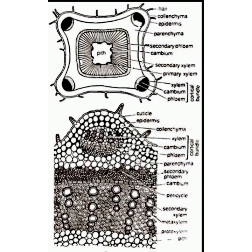Conjoint means both xylem and phloem are present in the same bundle. Collateral means xylem is towards the center and phloem towards the periphery. Open means it has cambium, so it is the open type. Exarch means the protoxylem is towards the periphery and the metaxylem is towards the center. These bundles undergo secondary growth at maturity.